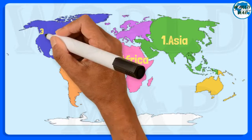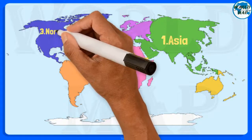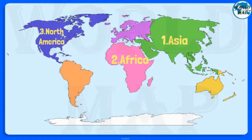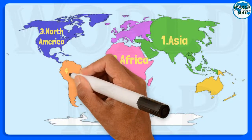Number 3: North America. It is the third largest continent on Earth in terms of area and fourth largest in terms of population. It comprises 23 nations and is entirely located in the Northern Hemisphere.